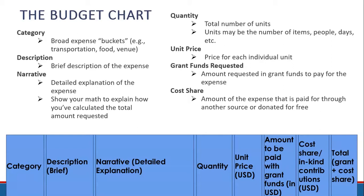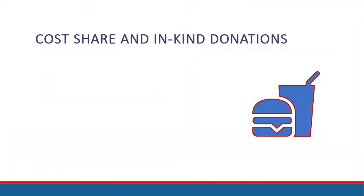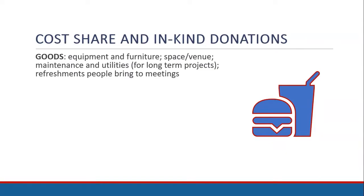Cost sharing: this is the amount of the expense that is paid for through another source or donated for free. And the total is the amount requested in grant funds plus the amount of cost share. So what is cost share? Cost share could be goods such as equipment, furniture, the venue, or for longer-term projects, maintenance and utilities.